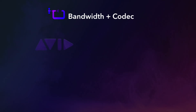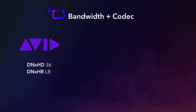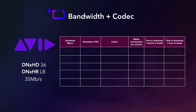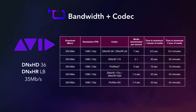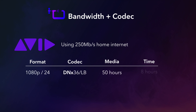The next question is: what codec are you working with? Most collaborative edit teams are editing on the Avid platform with either DNxHD36 or DNxHR LB, or on the Final Cut 10 or Premiere platforms using ProRes LT or ProRes HQ. With 1080 material in DNx, bit rates average about 35 megabits per second. Based on my home internet bandwidth, I can download approximately one minute of footage every seven or eight seconds — an entire hour of DNxHD will download in under 10 minutes. For ProRes LT, one minute of footage downloads every 15 to 20 seconds, and an hour of ProRes LT downloads in under 20 minutes. For typical HD dailies, I can download about 50 hours of DNxHD media in 8 hours, or about 30 hours of ProRes LT in 8 hours.